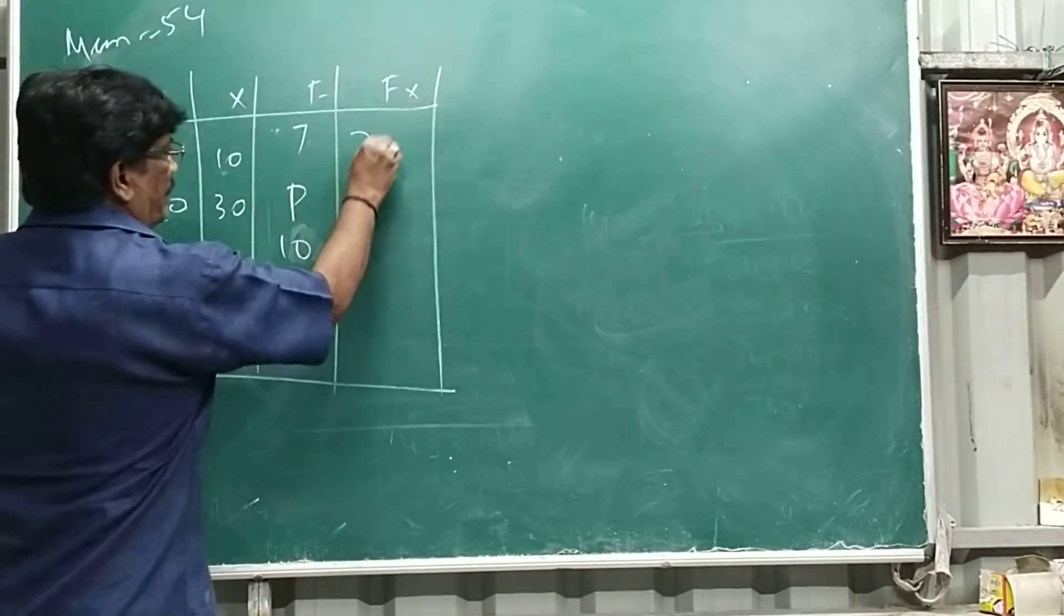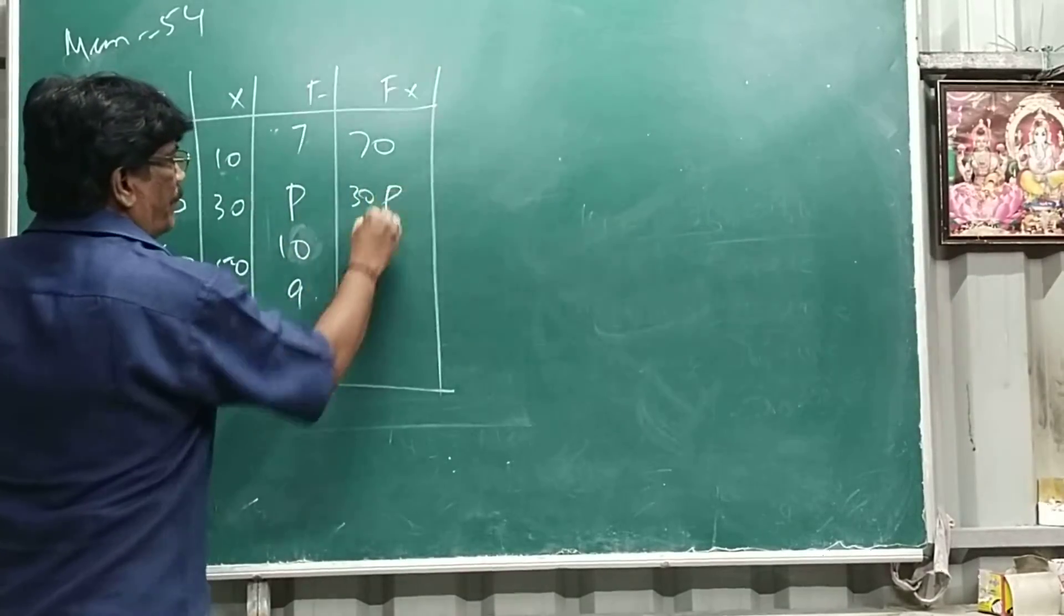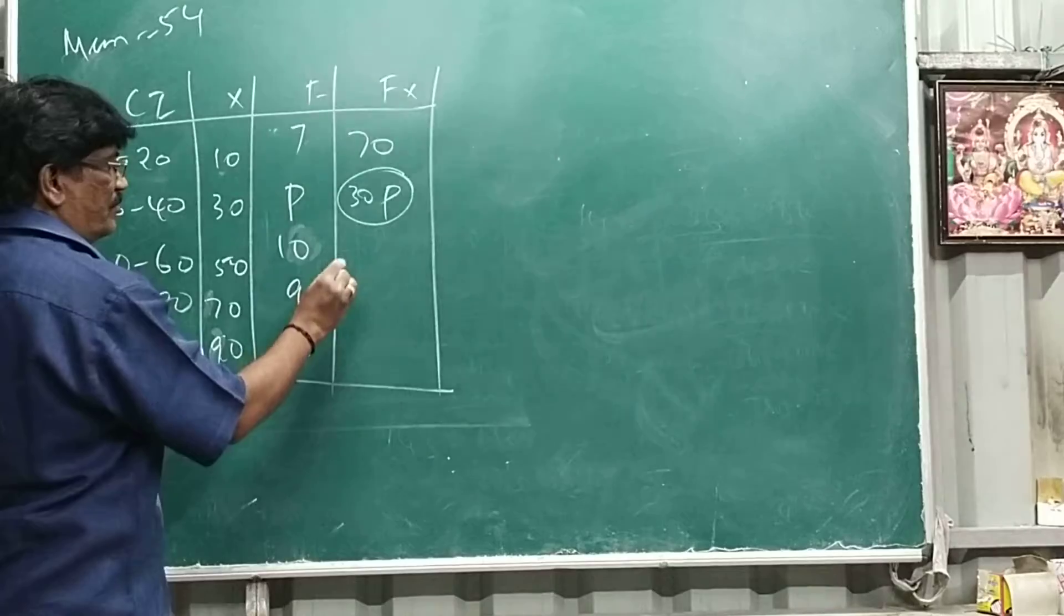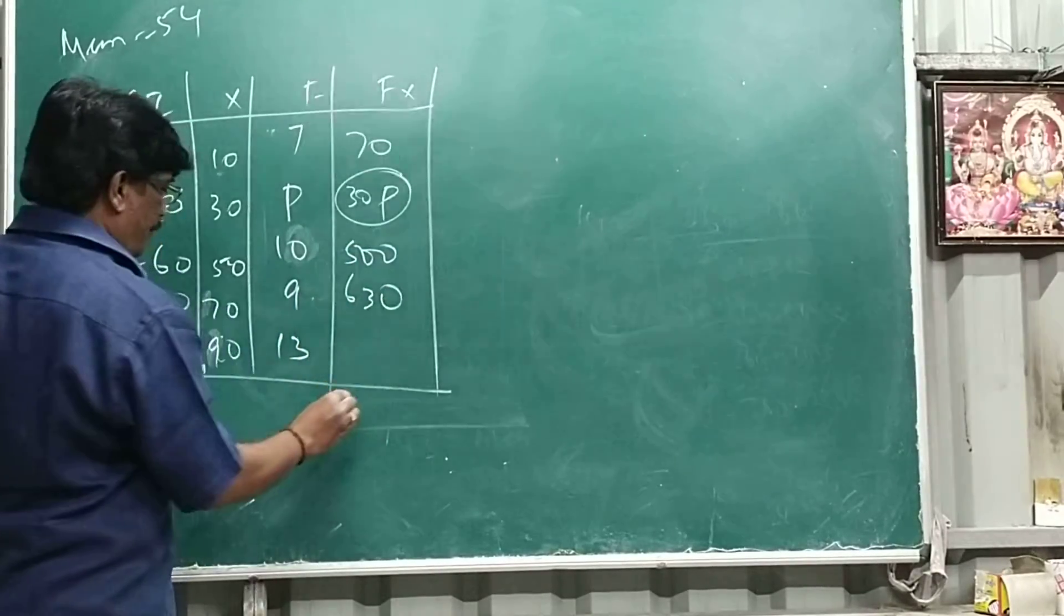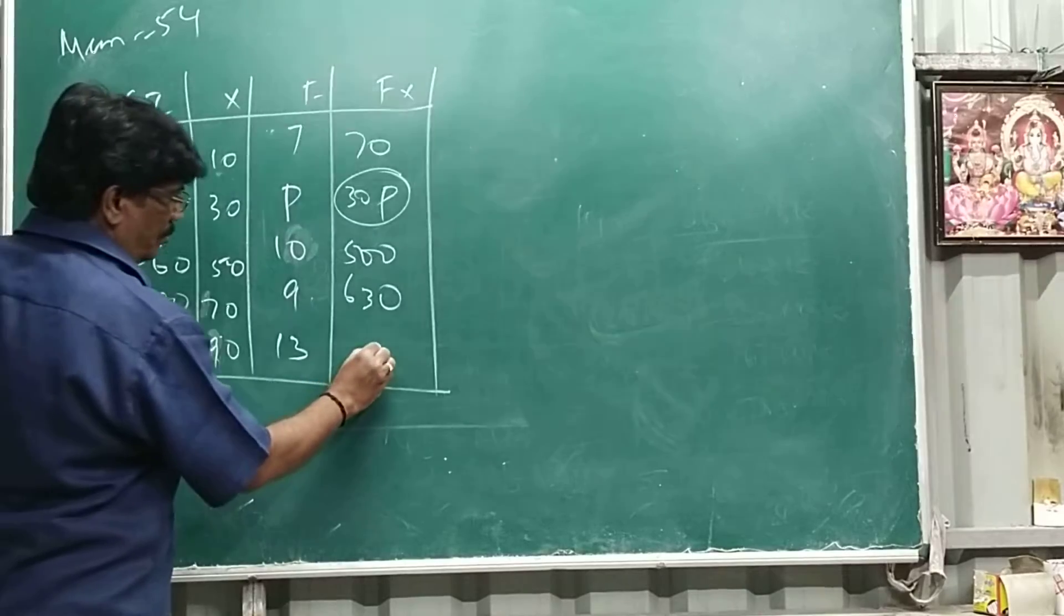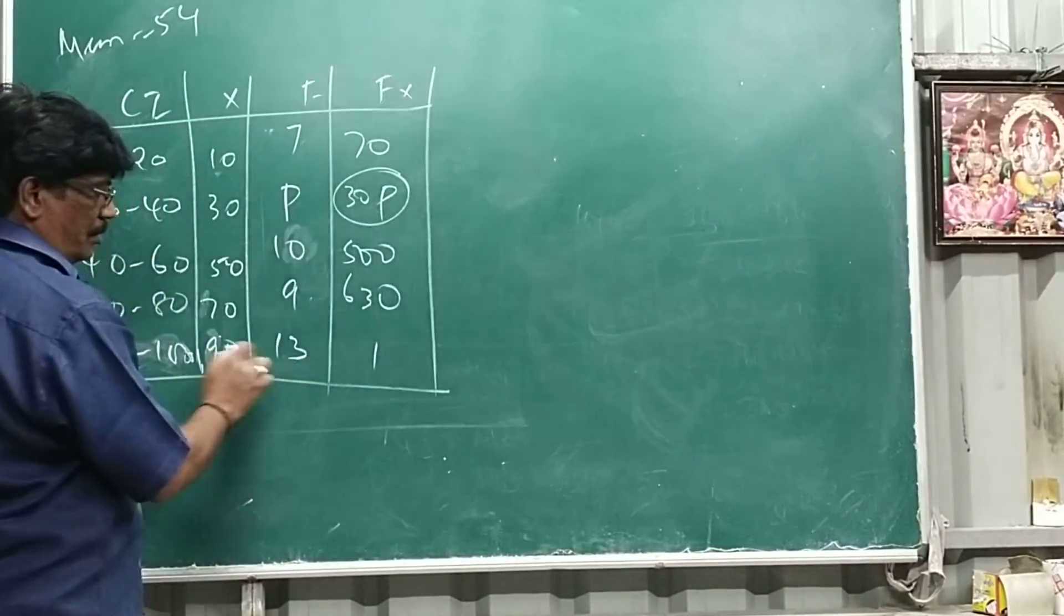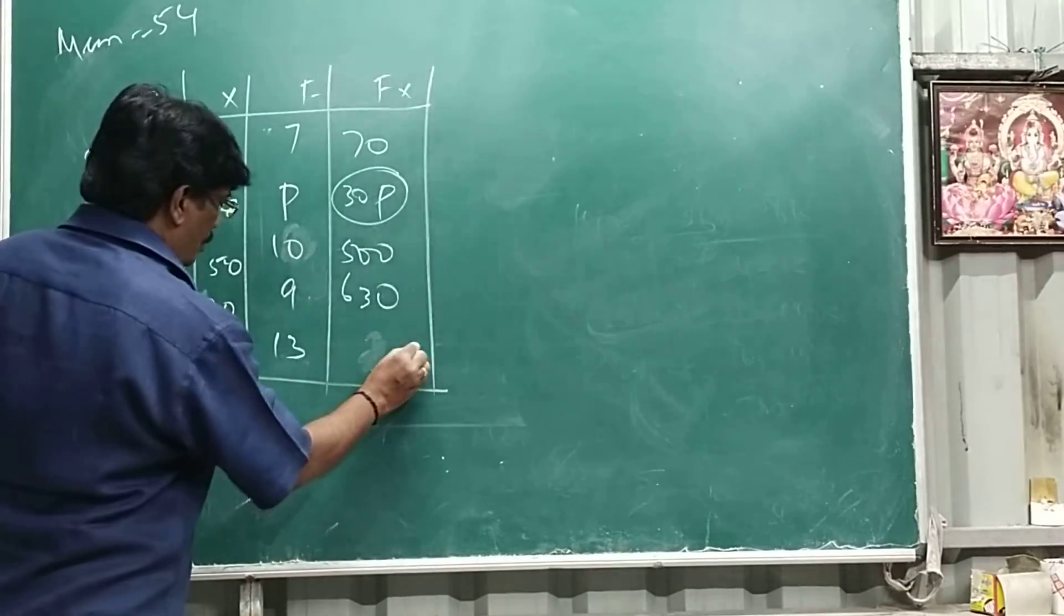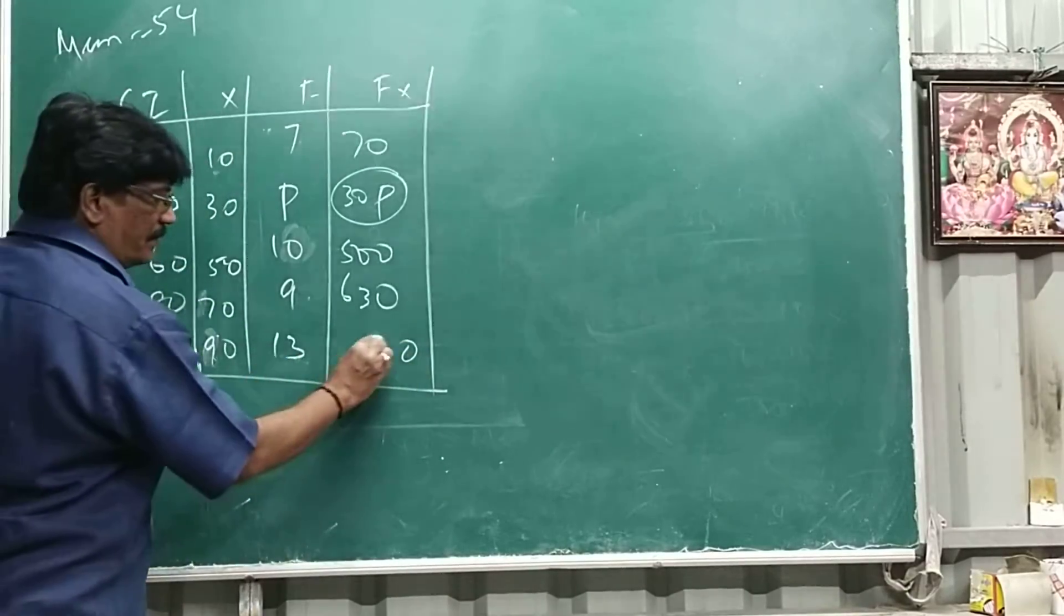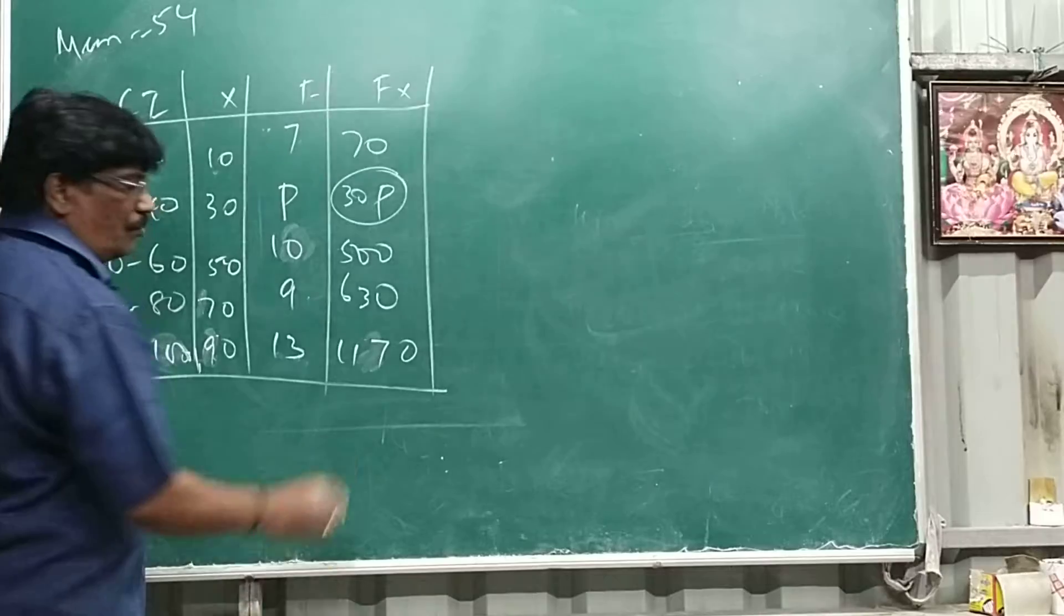Then multiply, this is 70, 30p, then this is round off because different numbers, 500, 630, 30 means 1, 20, 27 now, 0, 9, 0, 27, 7, 2, 1, 1, 7, 0.